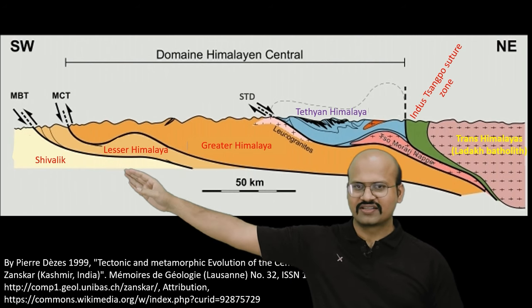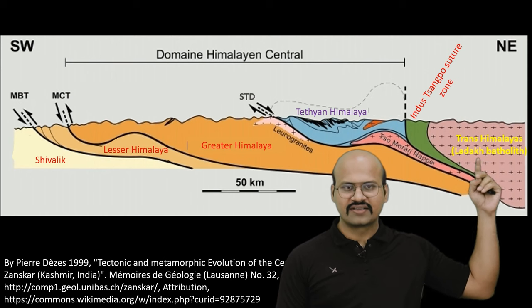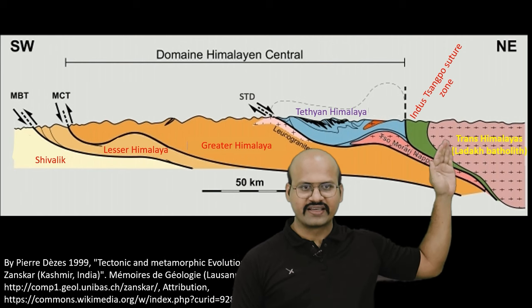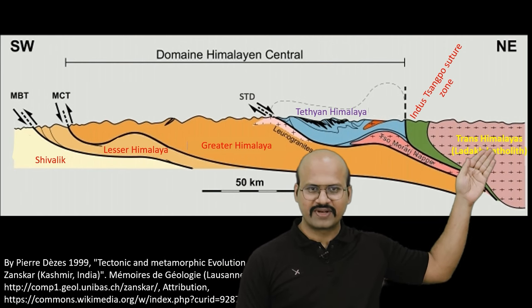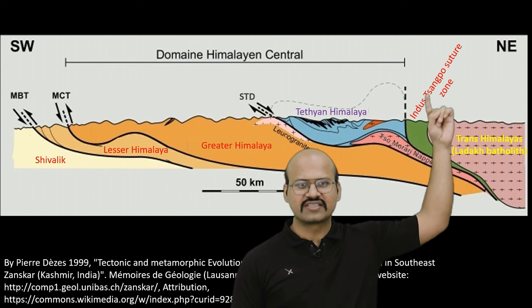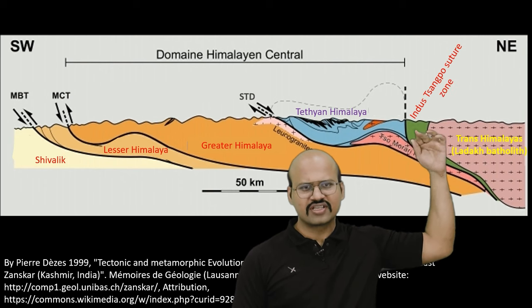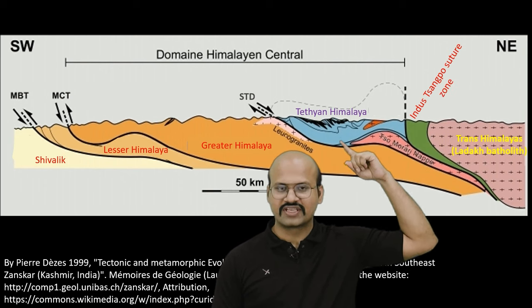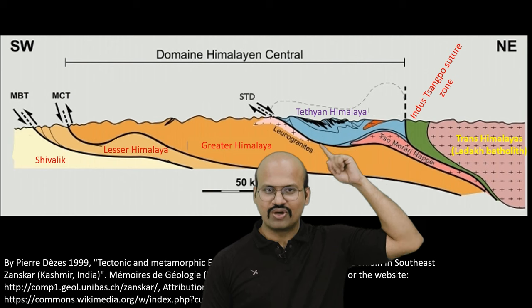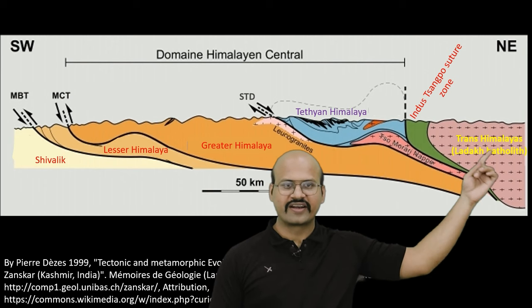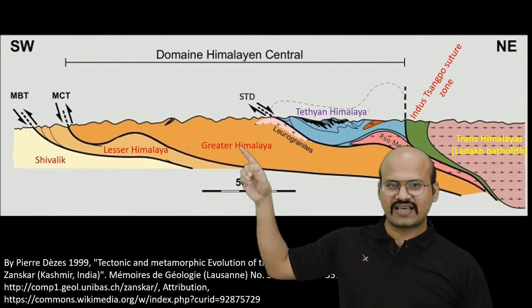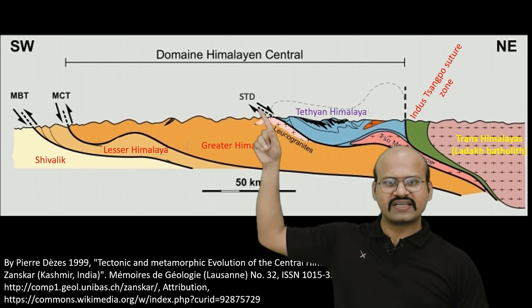Translating the cross-section into familiar terms: this is the Greater Himalayan region, this is the Lesser Himalayan region, these are the Sivaliks, this is the Trans-Himalayas, and here we have the Yarlung-Tsangpo suture zone. The Trans-Himalayan batholith is a part of the Eurasian plate. The region where the Indian plate comes in contact with the Eurasian plate is called the Yarlung-Tsangpo suture zone. The Tethian Himalayas, uplifted from the Tethys ocean, lie above the Indian plate, and the separation between the Tethian Himalayas and Greater Himalayas is called the Southern Tibetan Detachment.